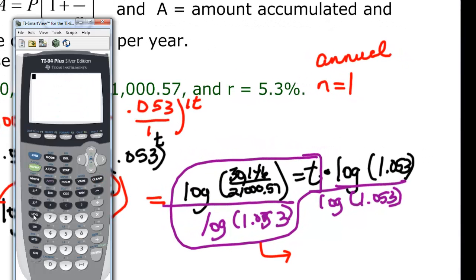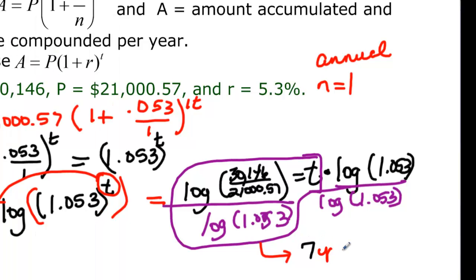Clear everything out. I have the log of, in parentheses, 30,146 divided by the 21,057. And now I can close the parentheses because that's my first argument divided by the log of my bottom argument which is 1.053. That definitely rounds to 7 years.